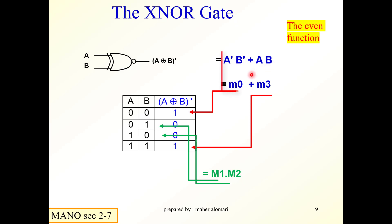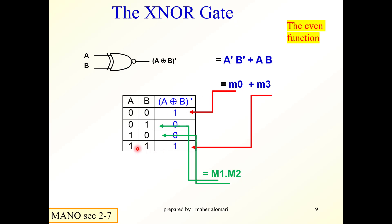This gives minterm 0 and minterm 3. We can also say that the output of the exclusive NOR gate is the product of max terms M1 and M2. The output is equal to 1 if the inputs are equal — that's why it's called the even function, because the number of ones at the input is even.